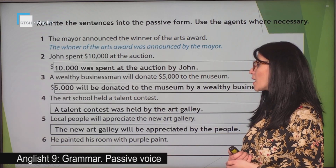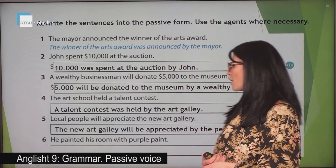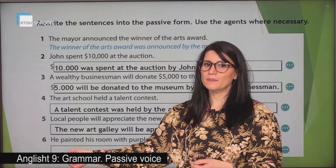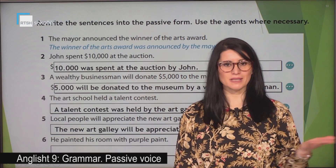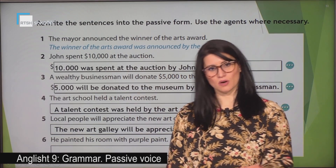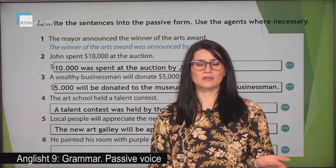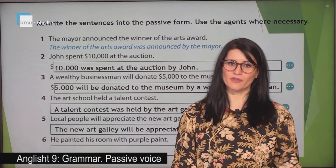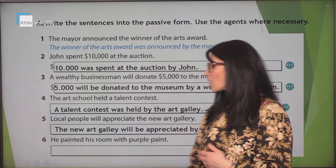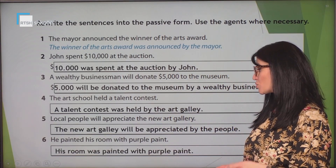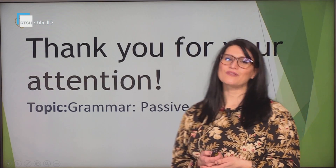And the last sentence: he painted his room with purple paint. Be careful — the verb here is in the past tense. So how do we form the past simple in passive? 'Was' or 'were' plus the past participle of the verb 'paint'. The verb 'paint' is a regular verb, so we form the past participle by adding '-ed'. The sentence would be: his room was painted with purple paint. Thank you for your attention.